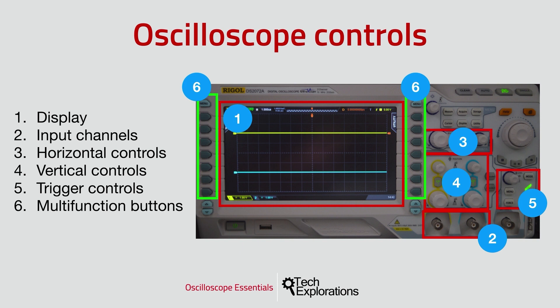1. A display to show the signal waveform, measurements, and other information. 2. Connectors for the probes — more about probes in a later lecture. 3. Controls that we use to set up the time scale of the screen and the horizontal position of the signal. 4. Controls that we use to set up the voltage scale of the screen and the vertical position of the signal.